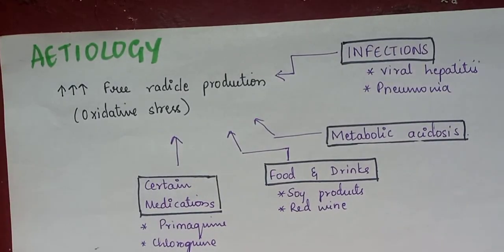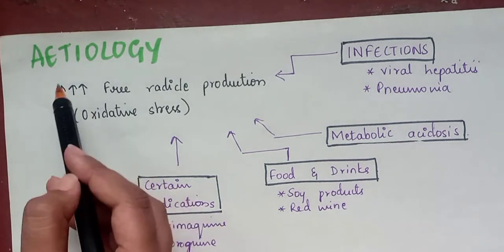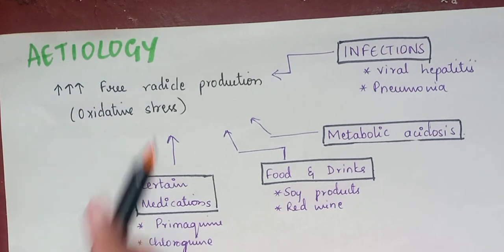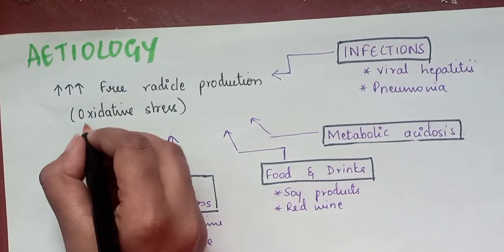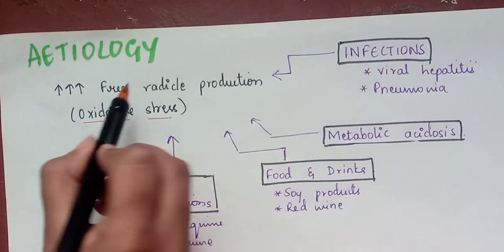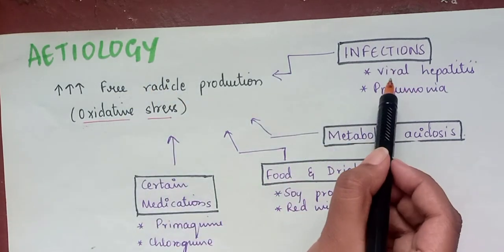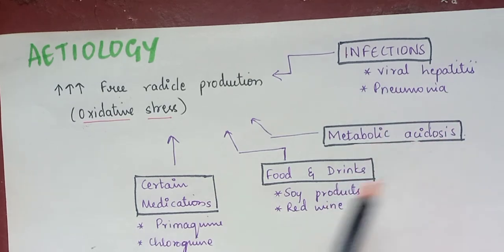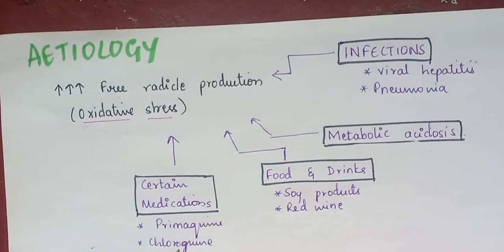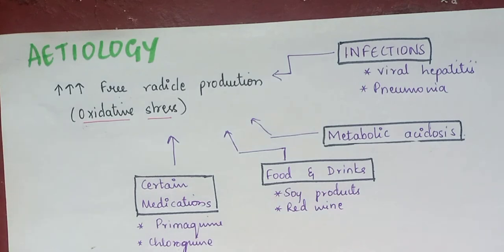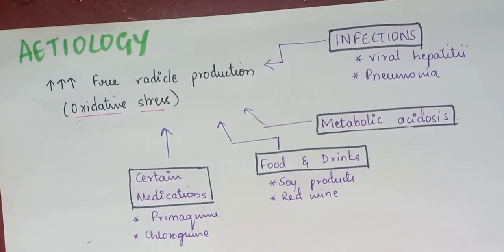Let's understand the etiology of G6PD deficiency. The main issue is increased free radical production causing oxidative stress. Triggers include infections such as viral hepatitis and pneumonia, metabolic acidosis, foods and drinks such as soya products and red wine, and certain medications such as primaquine and chloroquine. All these trigger oxidative stress leading to hemolysis.